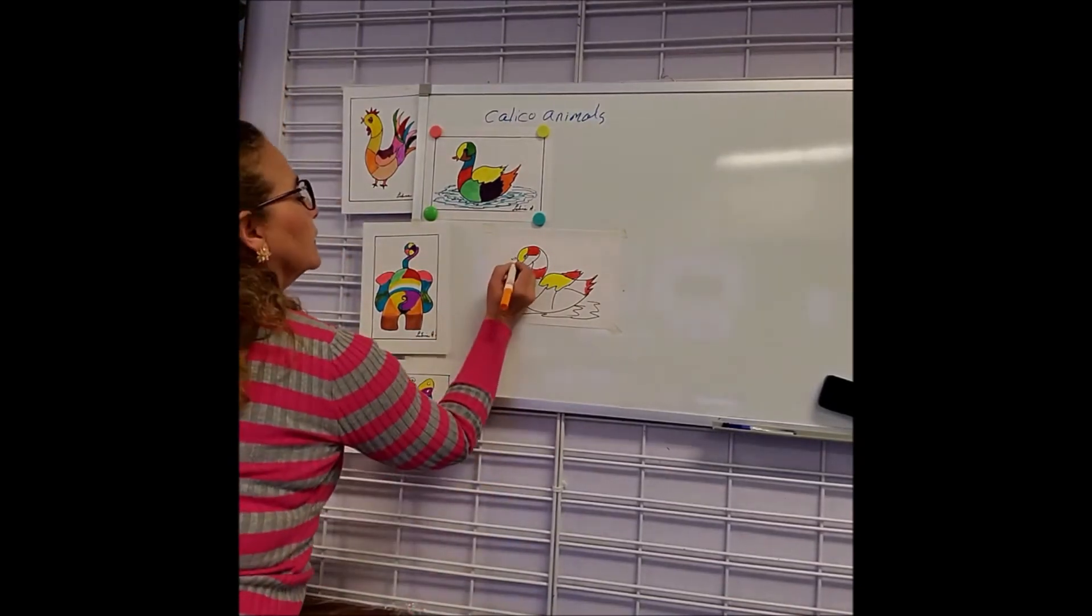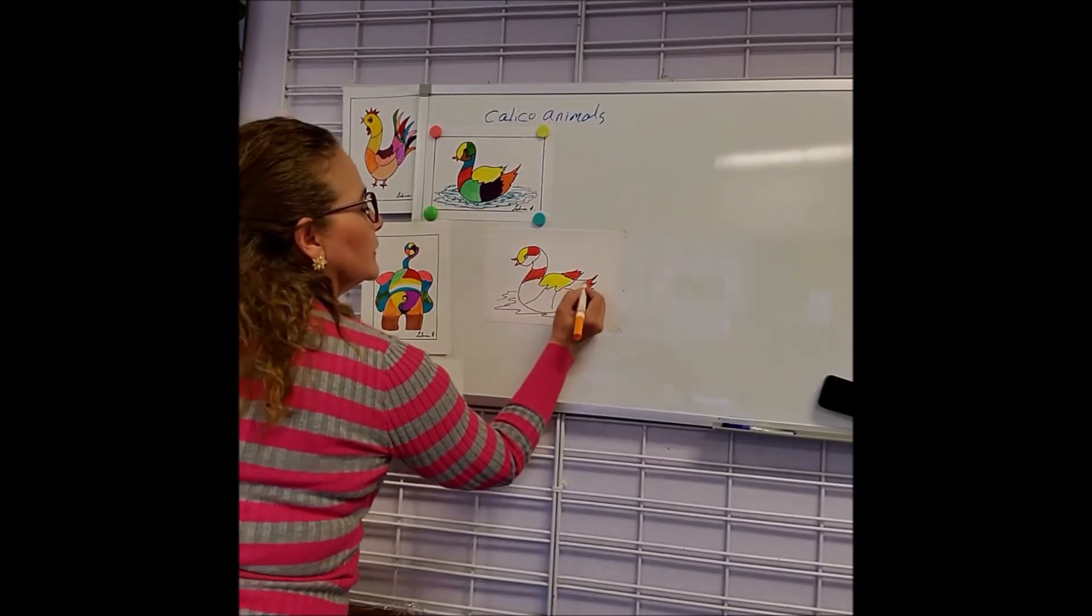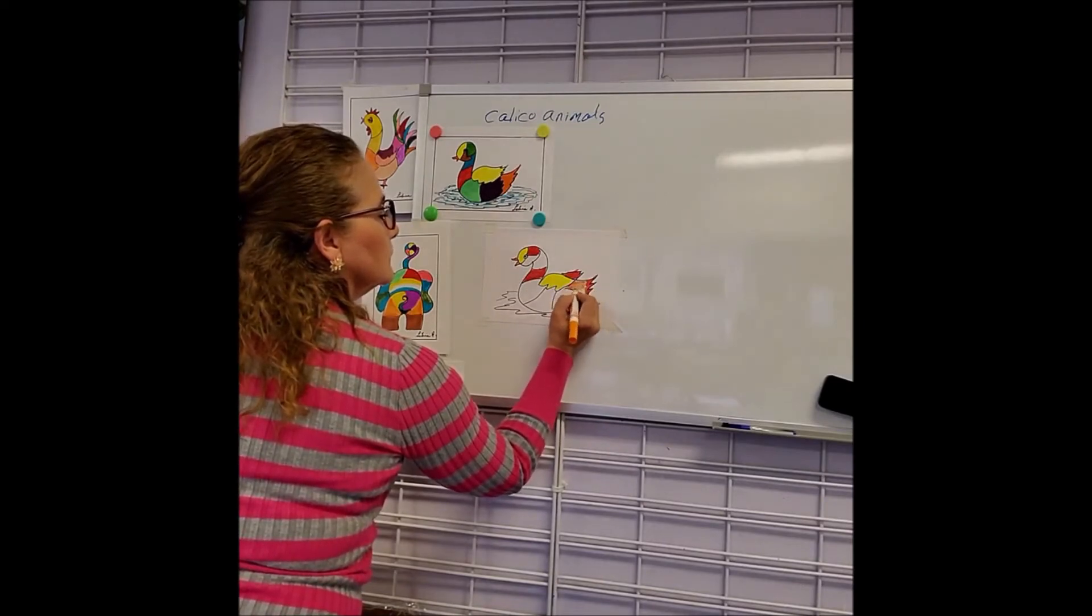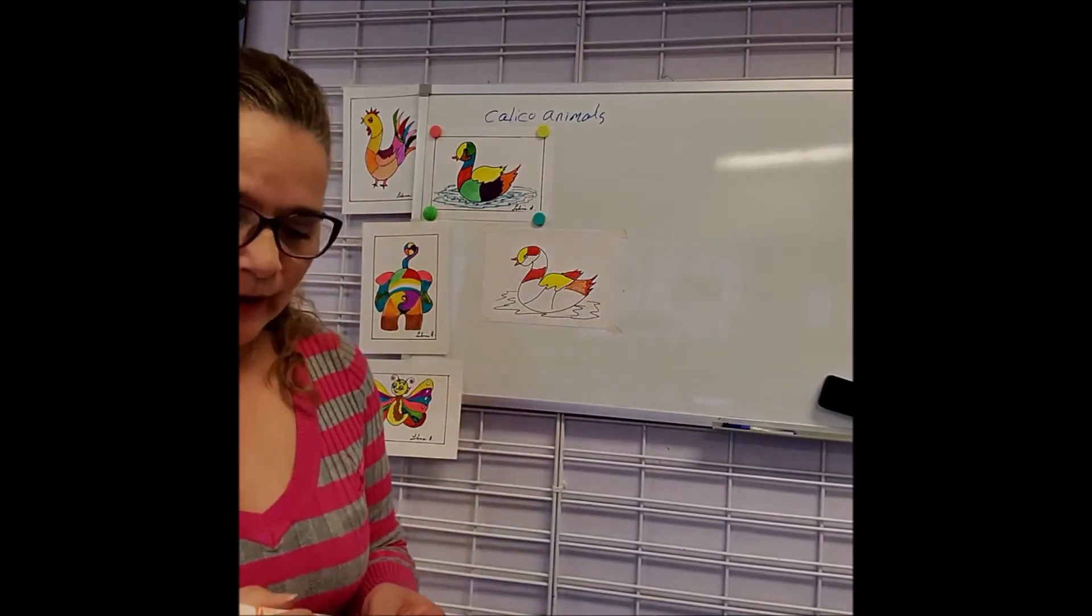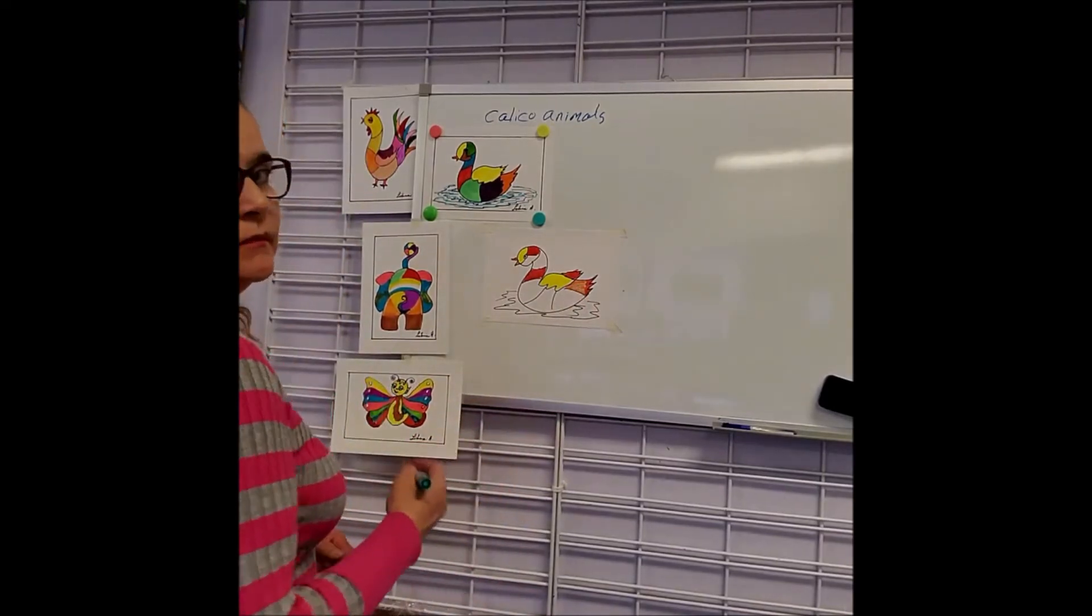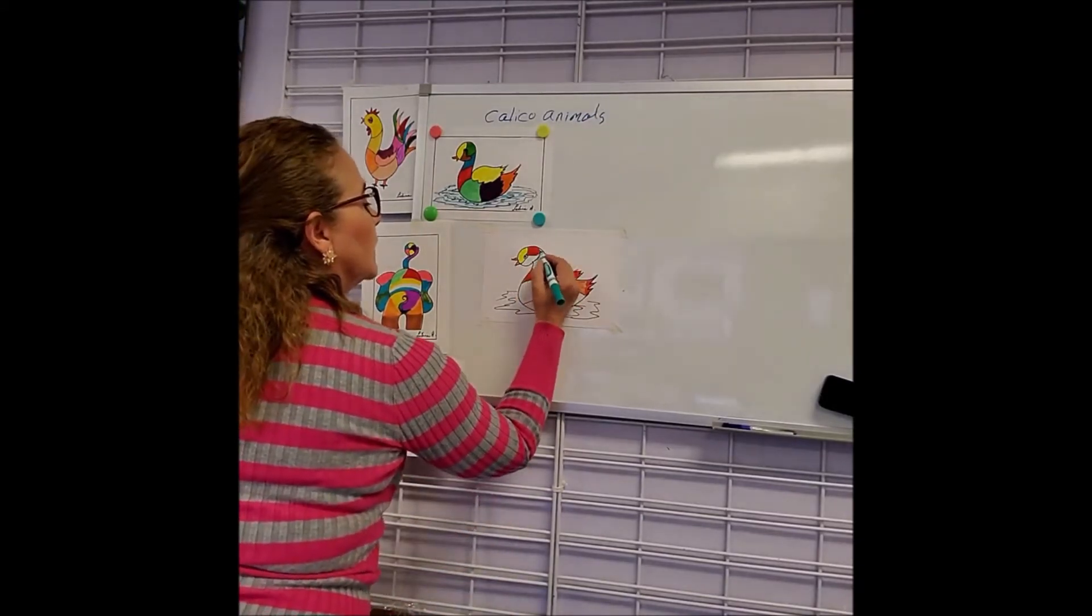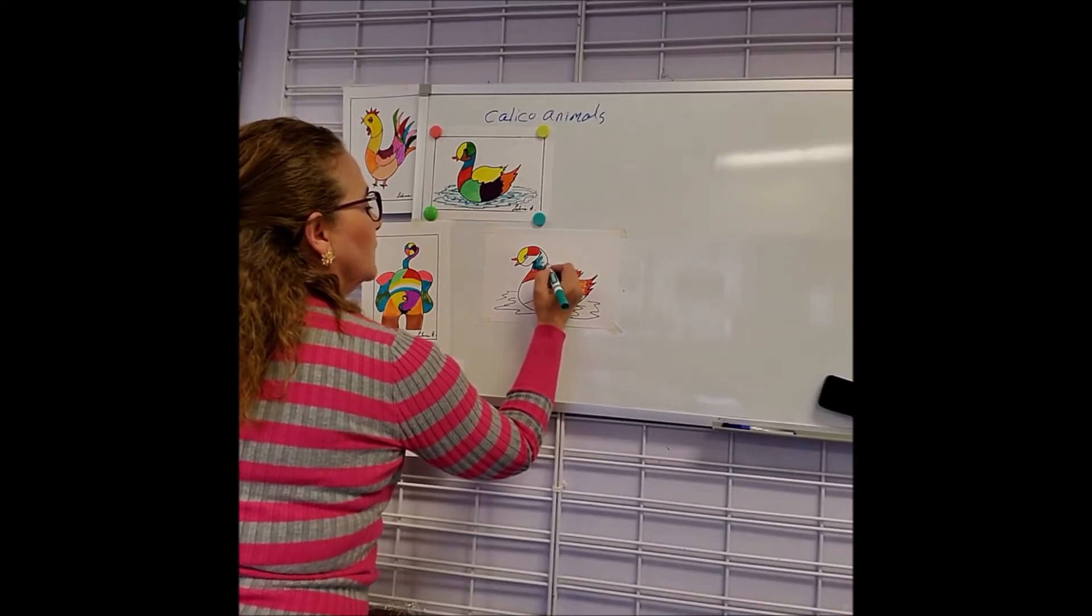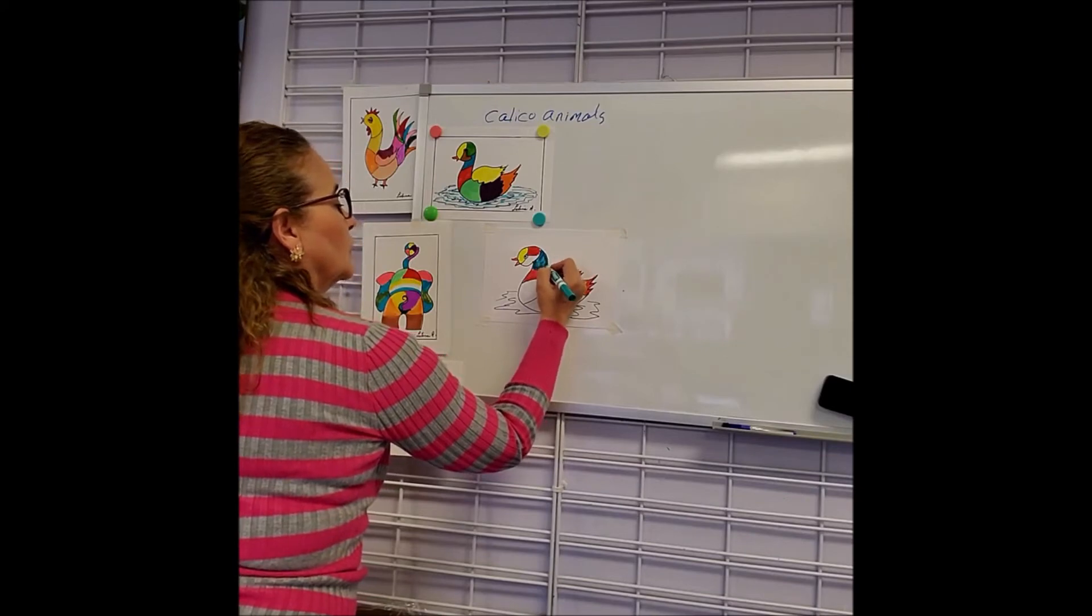Let's make the beak a little orangey. You can use crayons, you can paint with watercolors, you can use acrylic markers, any color thing that you have available will work.